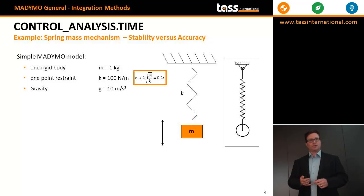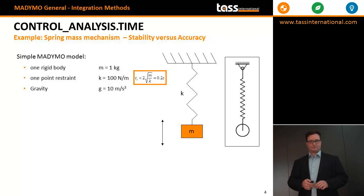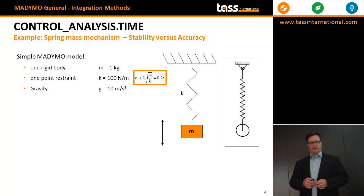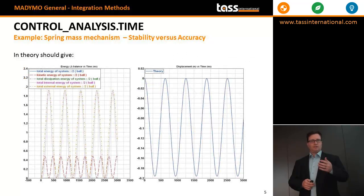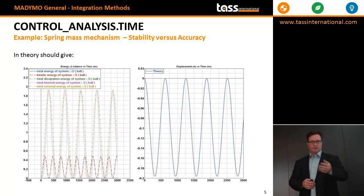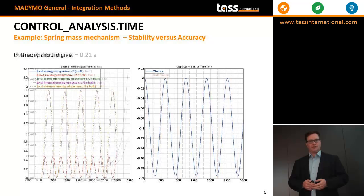In order to illustrate how this works and what you can do as a user to prevent unstable or inaccurate calculations, we'll look at a simple example of a spring and mass system. Here we have a mass of one kilogram restrained by a point restraint with a stiffness of 100 N per meter, loaded by gravity, and we release the mass from the untensed position. This simple example has an analytical solution for which you can calculate the time history of the deformation as well as the energy balance, which you can see here in the graphs.